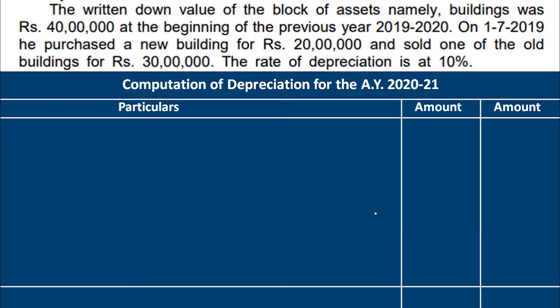So, the written down value of the block of asset, namely building, was Rs. 40 lakh at the beginning of the previous year 2019-20. Then, on 1-7-2019, he purchased a new building for Rs. 20 lakh and sold one of the old buildings for Rs. 30 lakh. The rate of depreciation is 10%.